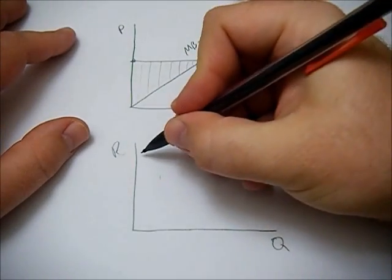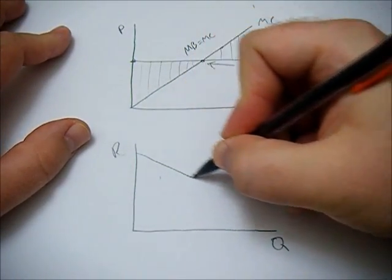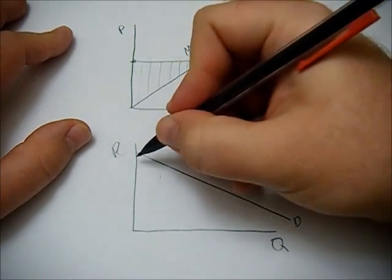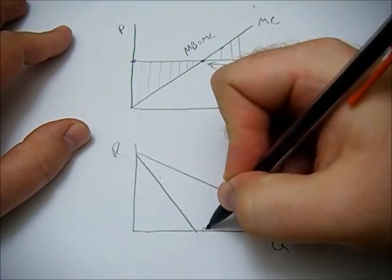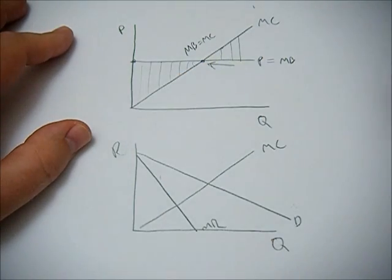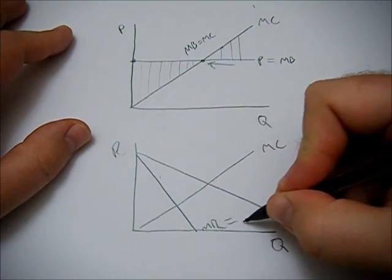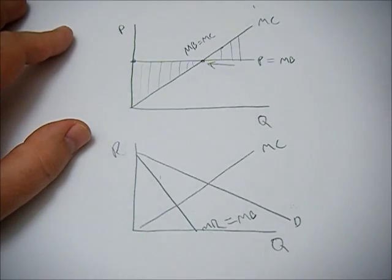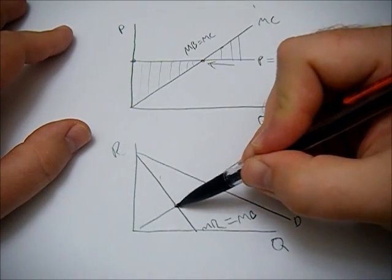Finally, we could look at a monopoly or a monopolistic competition. And we would have our demand, our marginal revenue, and then our marginal cost. So here, our marginal revenue would be our marginal benefit. And the same sorts of principles apply.